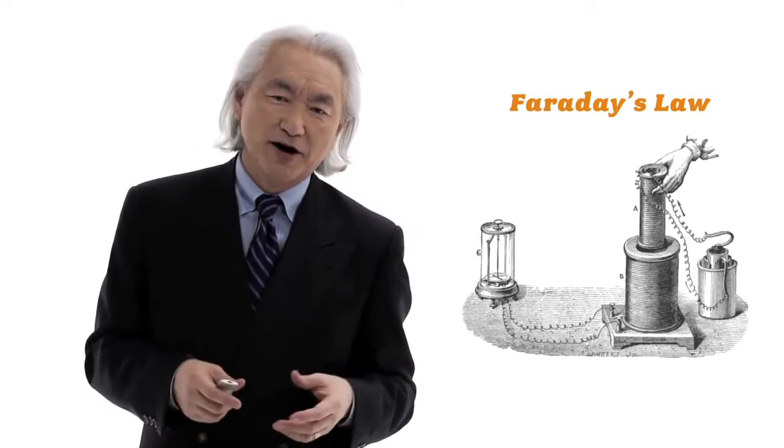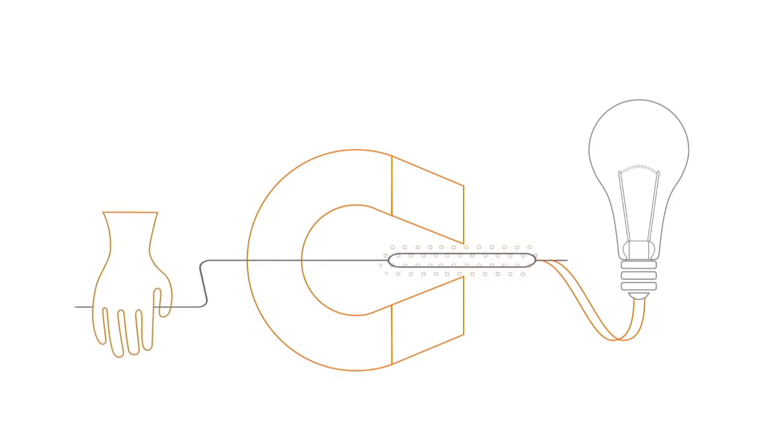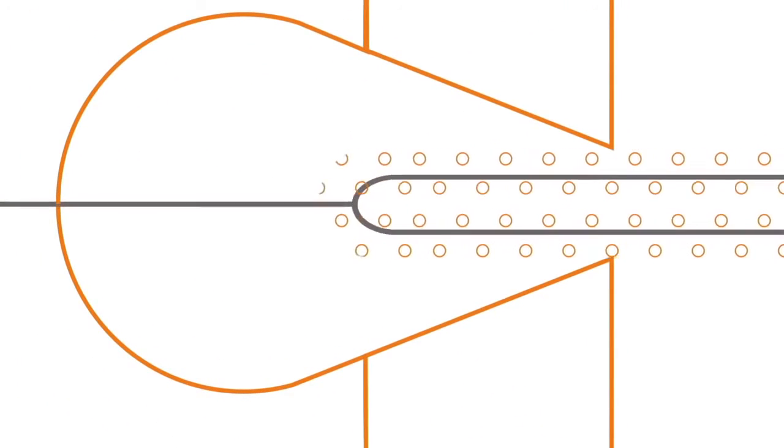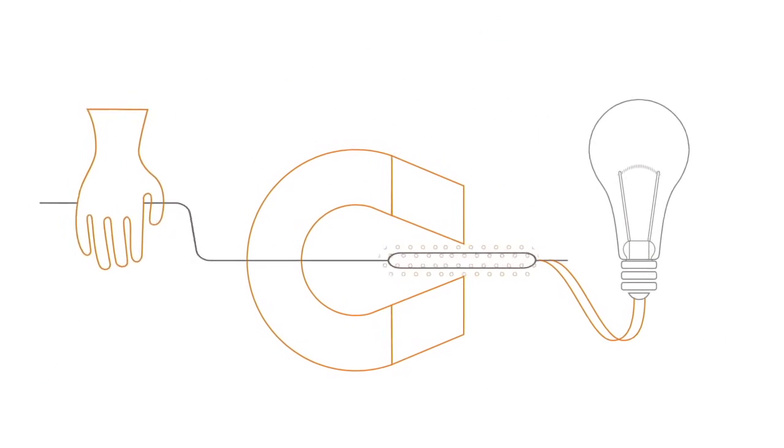Well what Michael Faraday did was he helped to unleash the second great revolution with something called Faraday's law. A moving wire in a magnetic field has its electrons pushed creating an electrical current.